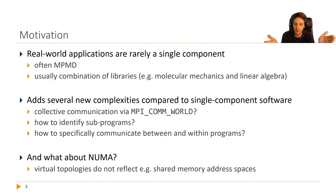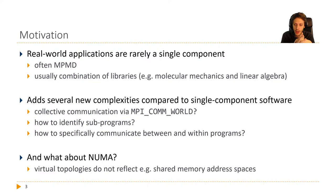If we do collective communication with MPI_Comm_world, every rank will be involved that exists in our MPI universe. That doesn't really help us in identifying sub-programs. You could come up with an elaborate scheme to identify ranks manually, but MPI tries to help us with frequently occurring programming patterns — like neighbor communication and virtual topologies — and offers something there.